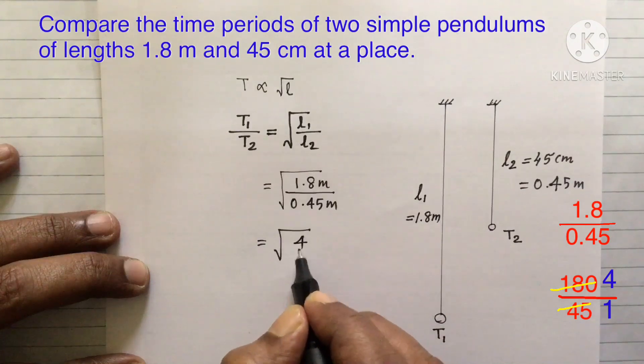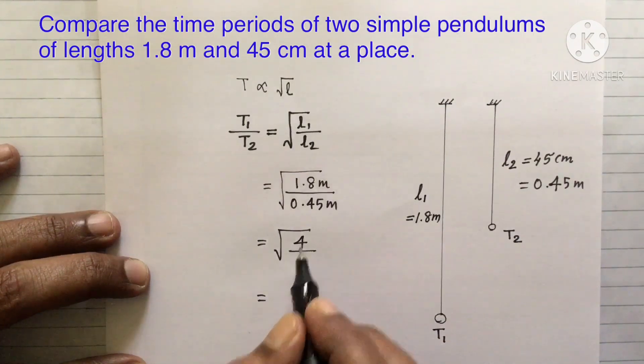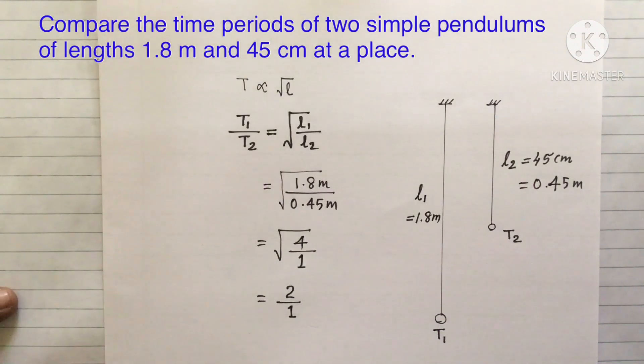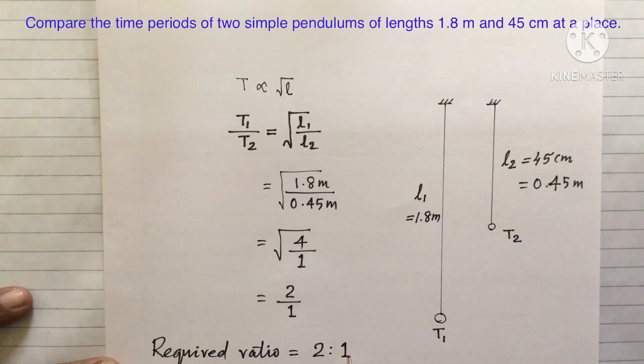Yes, here it is 4 by 1. That is equal to square root of 4. It is 2 divided by square root of 1. Well, so the required ratio is, you know, is equal to 2 is to 1.